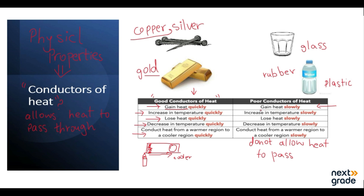The characteristics of poor conductors of heat are: they gain heat slowly — when you heat these things, they absorb heat very slowly and their temperature increases slowly. They also lose heat slowly; when you leave them to cool down, they cool very slowly. They also conduct heat from a warmer region to a cooler region slowly.